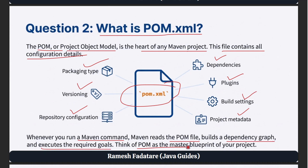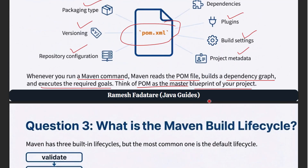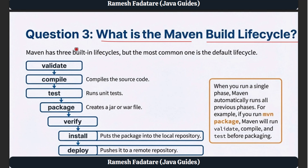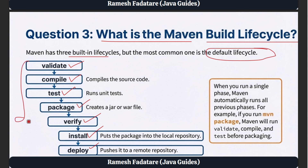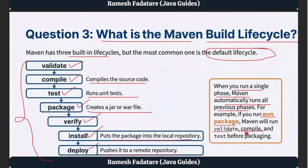Question 3: What is the Maven build lifecycle? Maven has three built-in lifecycles, but the most common is the default lifecycle, which handles the entire build process. The default lifecycle contains many phases such as validate, compile, test, package, verify, install, and deploy. Each phase does a specific job: compile compiles the source code, test runs unit tests, package creates a JAR or WAR file, install puts the package into the local repository, and deploy pushes it to a remote repository. When you run a single phase, Maven automatically runs all previous phases — for example, if you run mvn package, Maven will run validate, compile, and test before packaging.